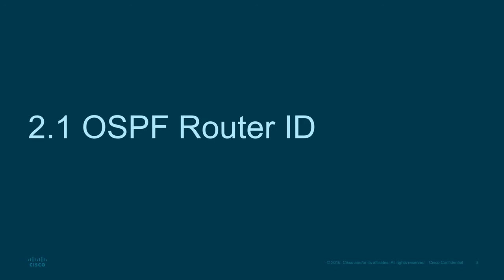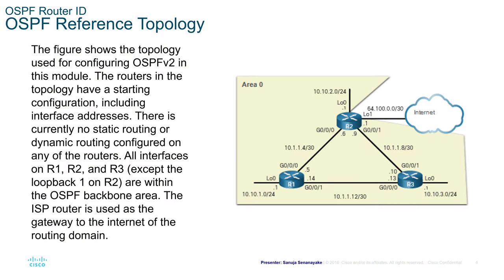The OSPF reference topology shown in the figure is used for configuring OSPF Version 2 in this module. The routers in the topology have a starting configuration including the interface addresses. There is currently no static routing or dynamic routing configured on any of the routers. All interfaces on R1, R2, and R3 except the loopback one on R2 are within the OSPF backbone area. The ISP router is used as the gateway to the internet of the routing domain.